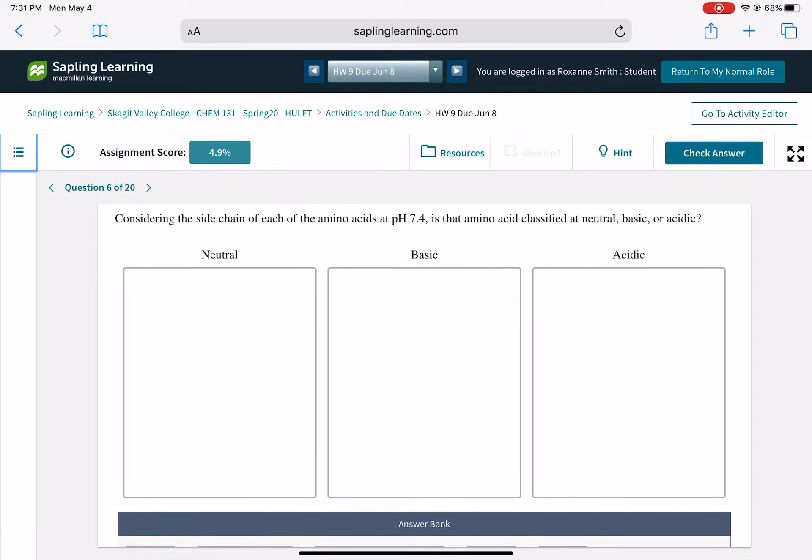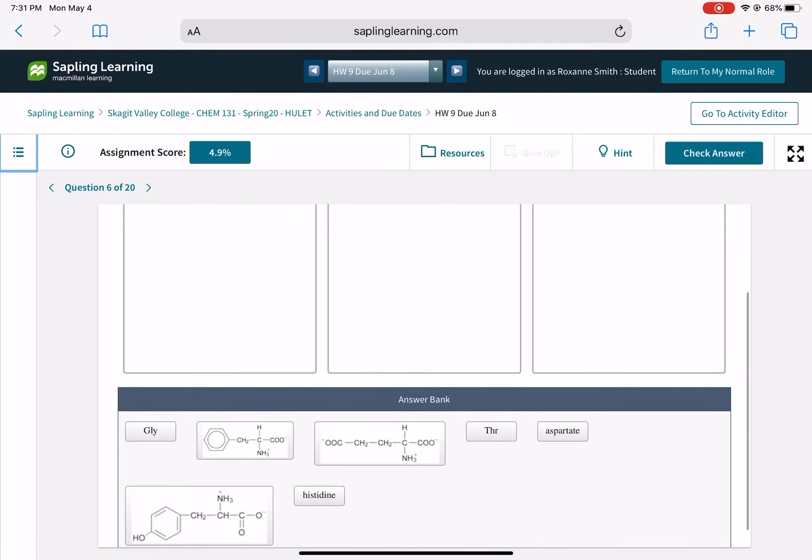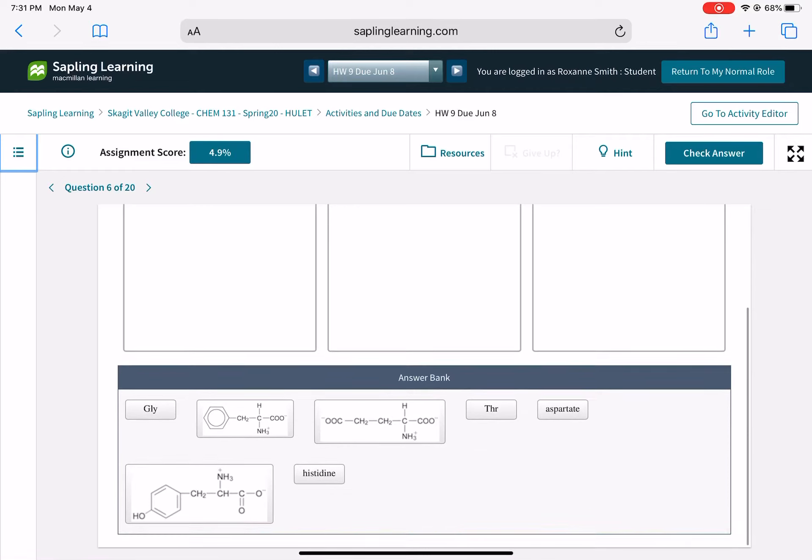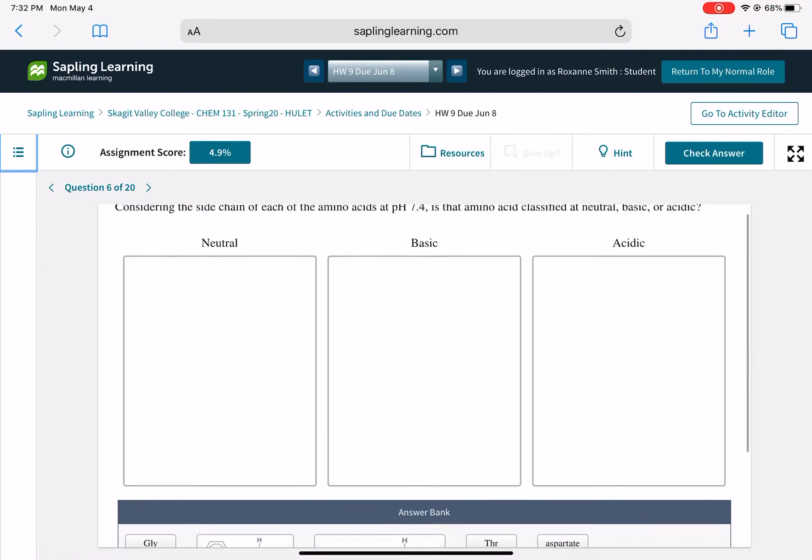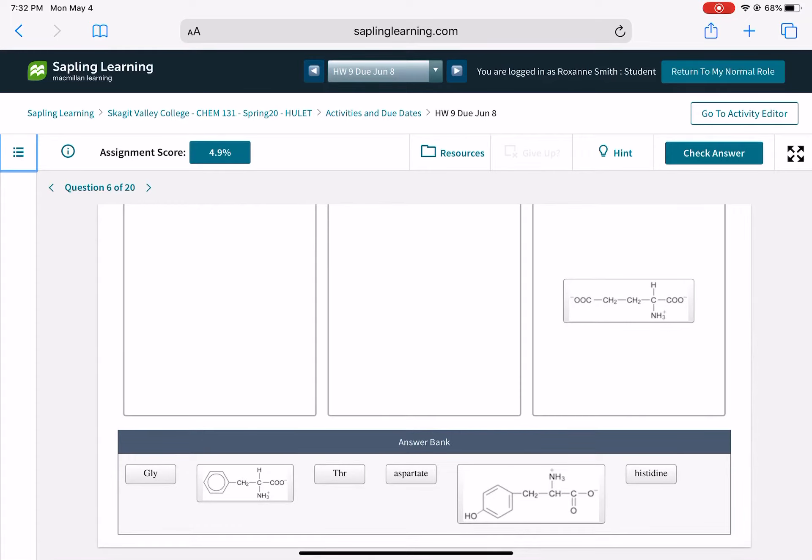So this question is asking you to classify these amino acids as neutral, basic, or acidic. Some of them, they're giving you the structure of the amino acid, like this guy right here. I can see, because it has COO-, I can see that that is an acidic amino acid, so I know where to put that.